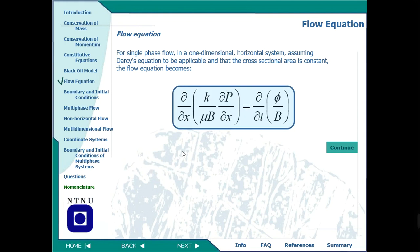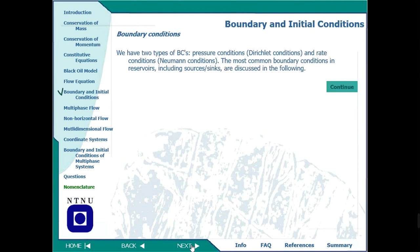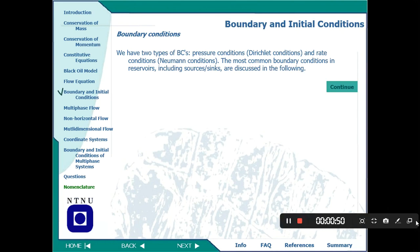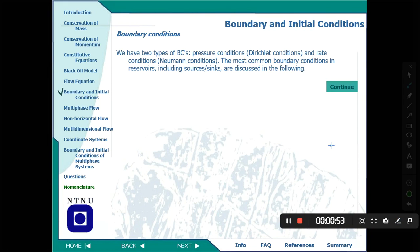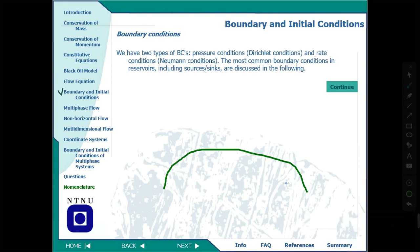When we talk about mathematical models, they are not complete unless you define their boundary and initial conditions. Any mathematical model must have those defined. For example, if you have the well at one point, what are the conditions exactly at that point and at the boundary of the reservoir? We have two kinds of boundary conditions: one is the pressure condition.